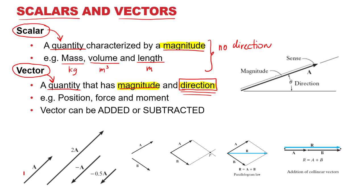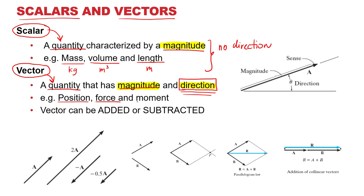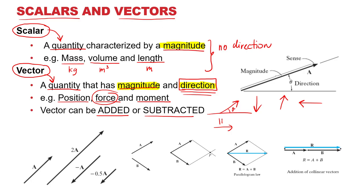Examples of vector quantities include position, force, and moment — all have directional arrows: up, down, left, right, or at an angle. You can add and subtract vectors. For example, 1 newton plus 2 newton in the same direction gives a resultant vector of 3 newton. Both magnitude and direction are important.